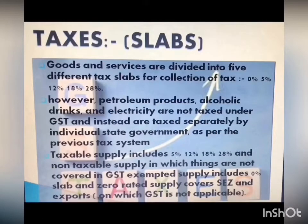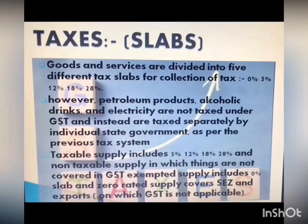Tax Slabs: Goods and services are divided into five different tax slabs for collection of tax, that is 0%, 5%, 12%, 18%, and 28%. A few products are not included under GST, which are petroleum products, alcoholic drinks, and electricity. These are taxed separately by individual state governments as per the previous tax system. The various supply categories include taxable supplies under 5%, 12%, 18%, and 28% slabs, and non-taxable supplies which are not covered under GST.